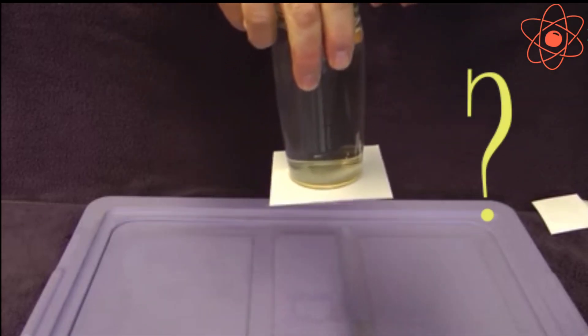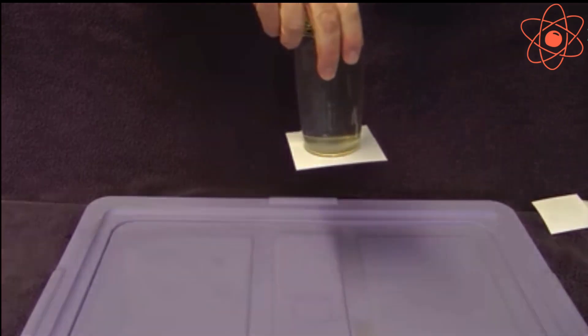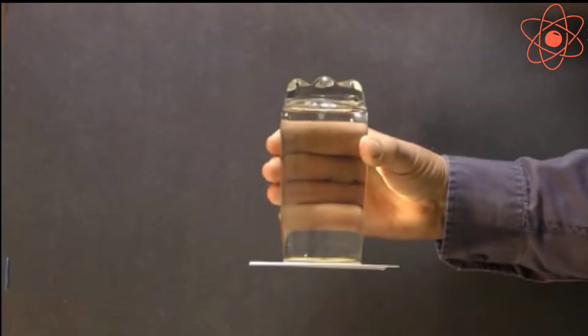What do you observe? We observe that the cardboard does not fall. The reason is that water exerts pressure on the upper surface of cardboard in the downward direction, and the atmospheric air exerts pressure on the bottom surface of cardboard in the upward direction. The pressure of atmospheric air is much larger than the pressure of enclosed water, so the cardboard does not fall.